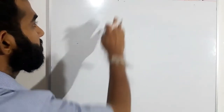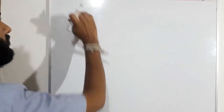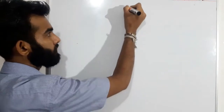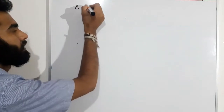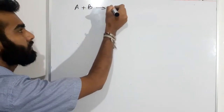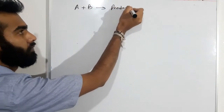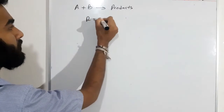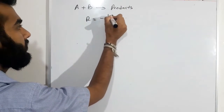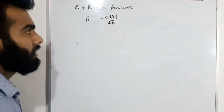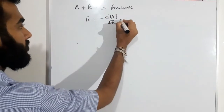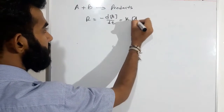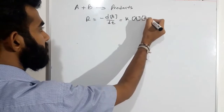At first order reactions, first of all, I will write down the reaction. Here, A plus B will produce products. What is the rate expression? Rate is equal to minus dA divided by dt. What is the rate law? It is equal to K, concentration of A and concentration of B.